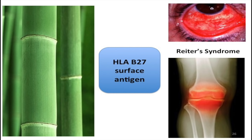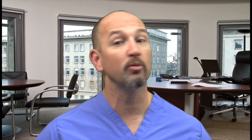Ankylosing spondylitis and Reiter's syndrome both have the HLA-B27 antigen. Ankylosing spondylitis typically happens in 30-year-old guys — imagine replacing the spine with a brittle light tube. A little jostle can break his back. For the boards, we don't want to tell the patient to live a sedentary lifestyle, but we also don't want them to run or ride a bike — they could fall. The recommended activity is swimming.